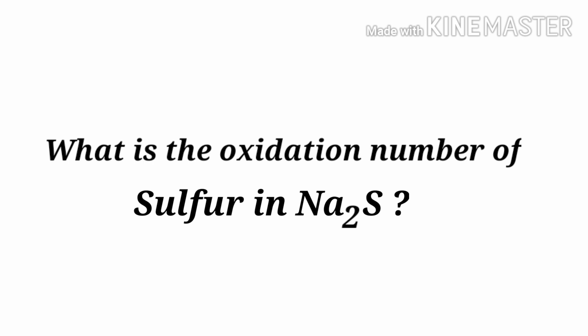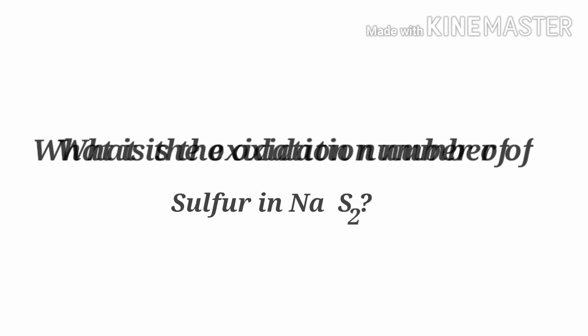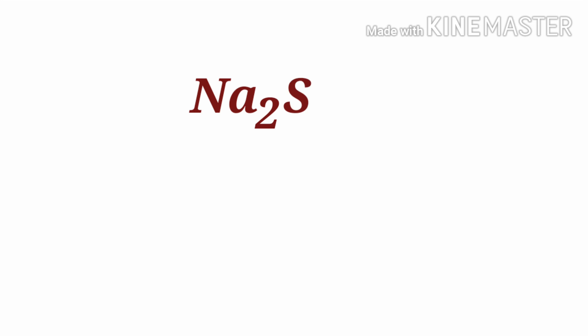What is the oxidation number of sulfur in sodium sulfide? We can use the oxidation number rules to determine oxidation numbers. Sodium sulfide is a neutral compound with an overall oxidation number of zero. Therefore, we know that the sum of the oxidation numbers of the atoms is equal to zero.